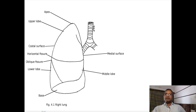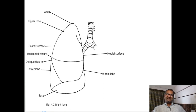The oblique fissure in relation with right lung: it starts posterior to the hilum, goes back up to the level of the fifth thoracic vertebra, then crosses the costal surface of the lung. In relation with the fifth intercostal space it goes anterior-inferiorly by forming a spiral course and meets with the inferior margin of the lung near the sixth intercostal space, at the sixth costochondral junction.